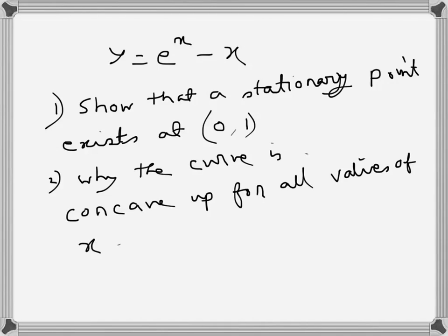Okay, for this curve I have to show that there is a stationary point at (0,1). A stationary point means a maxima or minima when the first derivative is zero. So let's find the first derivative: y' = e^x - 1.